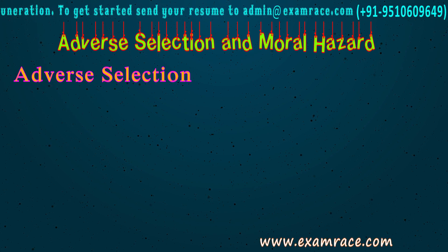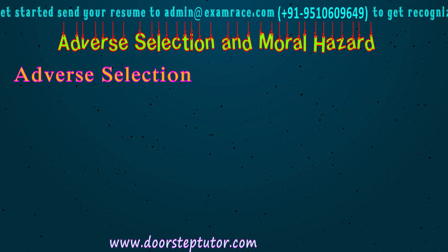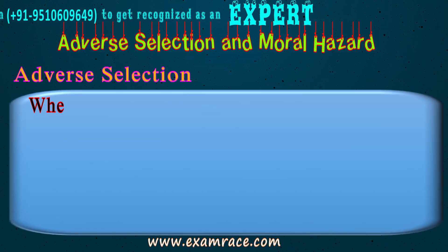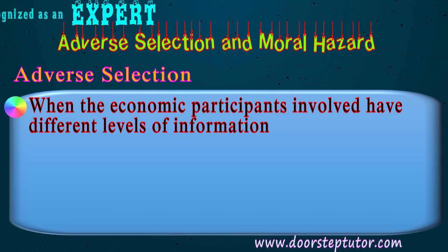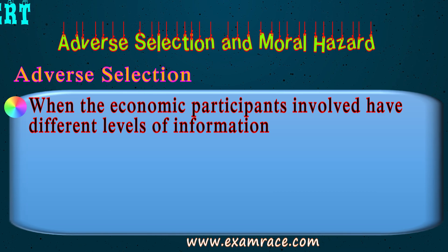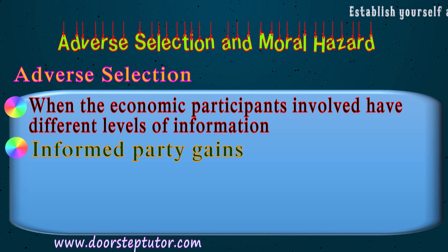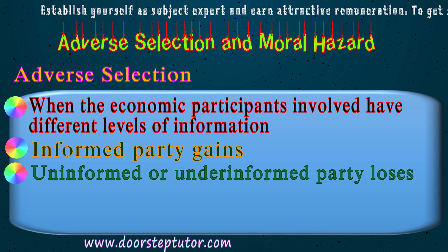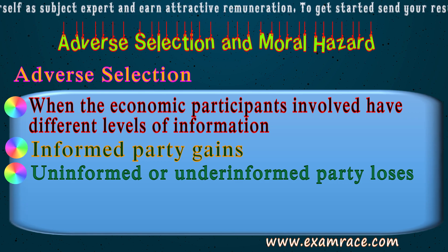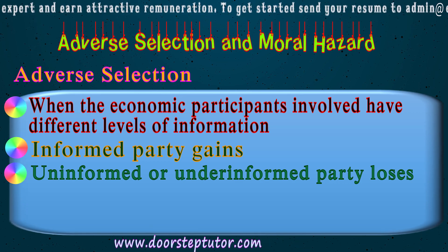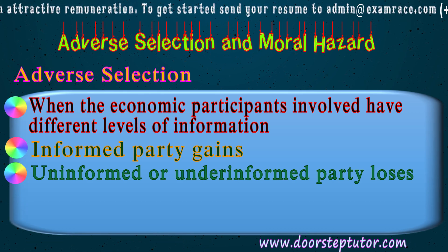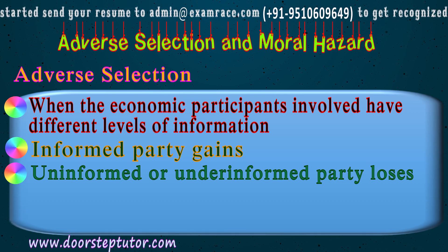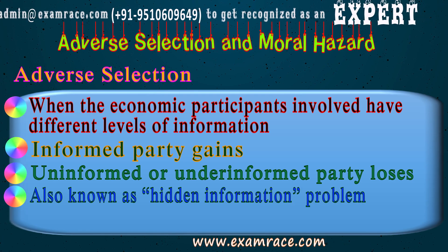In markets such as the insurance market and second-hand car market, problems of adverse selection and moral hazard may arise in cases of incomplete and imperfect information. Economic participants may have different levels of information, and sellers tend to exploit less-informed buyers by withholding information about product quality. Adverse selection arises when one party has more information about a good or service than the other party, and the informed agent gains more from the transaction. Adverse selection is also known as the hidden information problem.